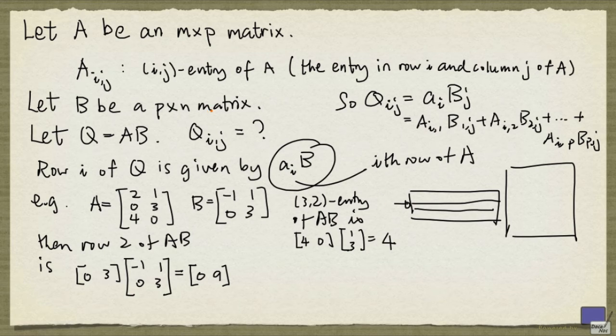Now that we can easily extract the ij entry of a product, we can show that matrix multiplication is associative.